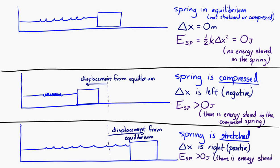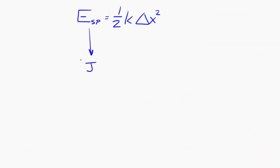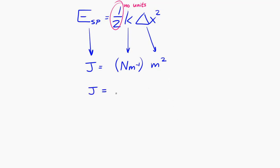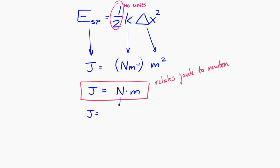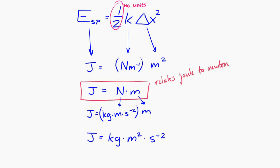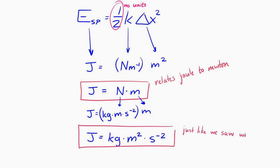Let's look at the units of the spring potential energy equation: one-half k delta-x squared. Spring potential energy must have units of joules. The one-half constant has no units. k has units of newtons per meter, and the displacement has units of meters, squared. Combining those, a joule equals a newton times a meter. Since a newton is a kilogram times meter per second squared, we find that a joule equals a kilogram times meter squared per second squared — just as we expected from the other types of energy.